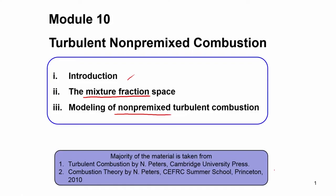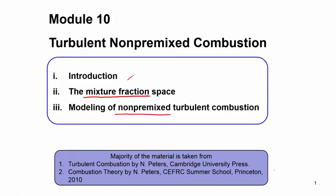In this module we will focus on turbulent non-premix combustion. This course is on combustion in air-breathing aero engines, and the gas turbine engine and ramjet engines are two very important parts. Most aero gas turbine engines have historically utilized turbulent non-premix combustion.